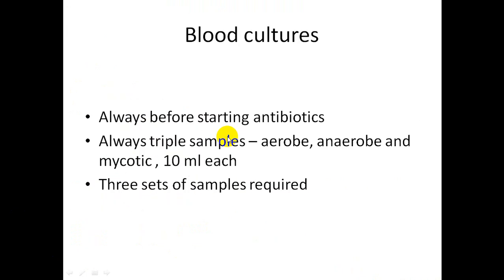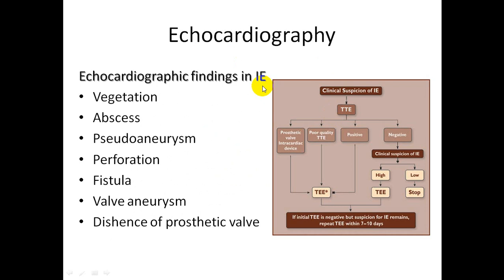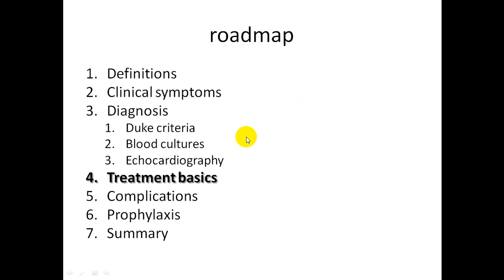Blood cultures must always be taken before starting antibiotics — always triple samples for aerobes, anaerobes, and mycotic organisms, 10 ml for each, three sets required. Echocardiography is fundamental for diagnosis, management, and follow-up, and should be performed as soon as infective endocarditis is suspected. Sensitivity of transesophageal echocardiography is 90–100% versus 60% for transthoracic. Echocardiographic findings include vegetation, abscess, pseudoaneurysm, perforation, fistula, valve aneurysm, and valve dehiscence for prosthetic valves.